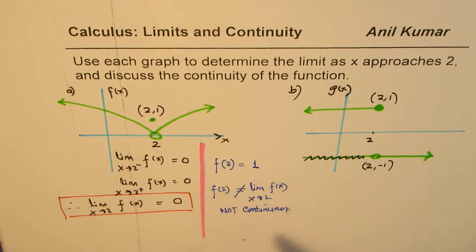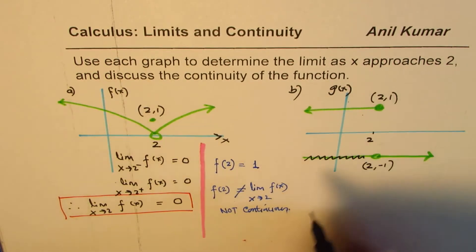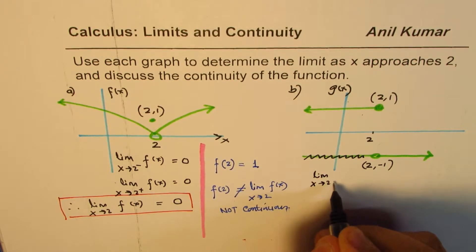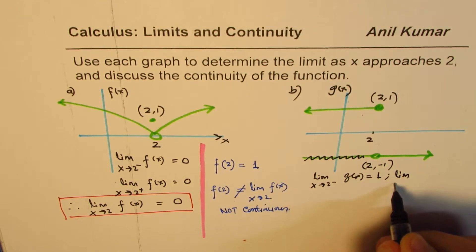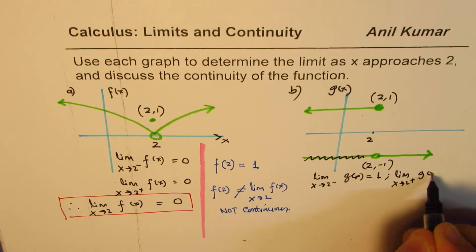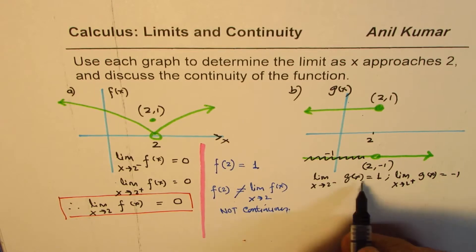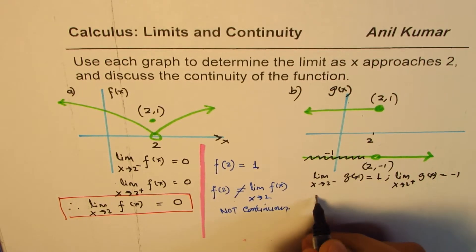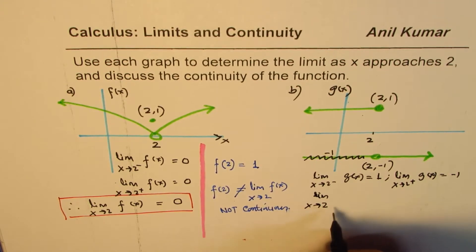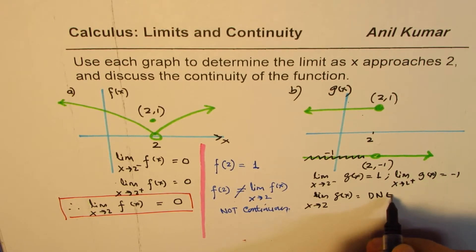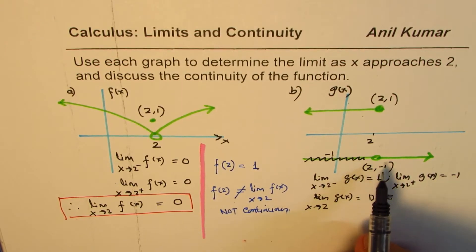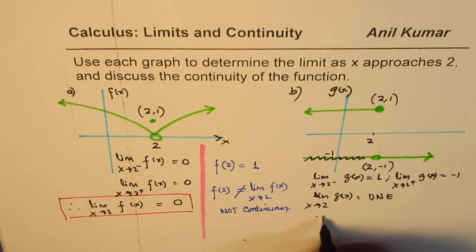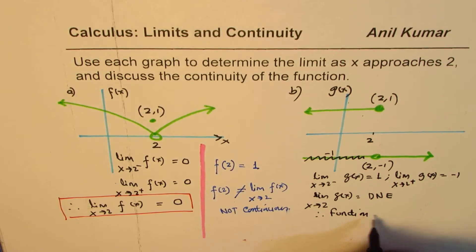Now for part b, g(x): the limit as x approaches 2 from the left side is positive 1, and the limit as x approaches 2 from the right side is negative 1. Since these two limits are not equal, the limit does not exist. Since the limit as x approaches 2 for g(x) does not exist, the function is discontinuous at that point.